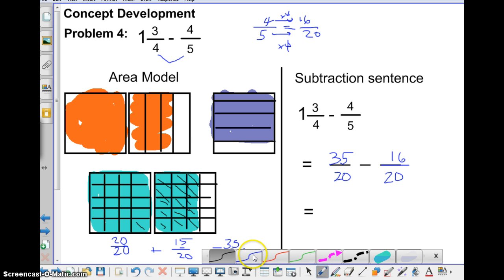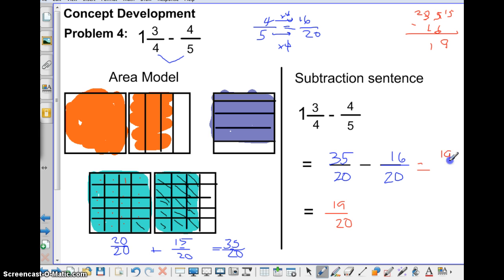How many do I have left? 1, 2, 3, 4, 5, 6, 7, 8, 9, 10, 11, 12, 13, 14, 15, 16, 17, 18, 19, 19/20 would be my answer. And if I look at it this way, if I did 35 minus 16, right? 35 minus 16, 15 and 2 would be 19/20. So it's the same thing.